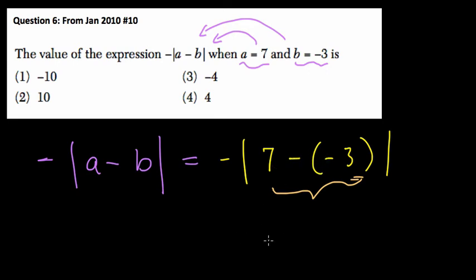7 minus negative 3, well, that's 10, because you're adding 3. Then you take the absolute value of 10, and then you inverse that, or multiply it by negative 1, or some people might say take the negative, same thing. So the absolute value of 10 is 10, and the inverse of that, or multiply it by negative 1, we get negative 10. So here we should get choice 1.